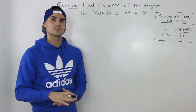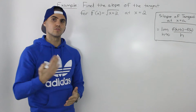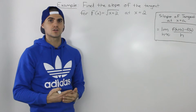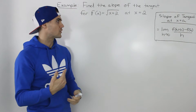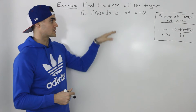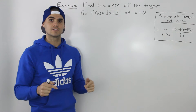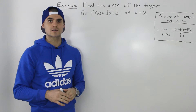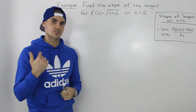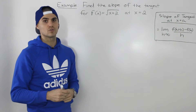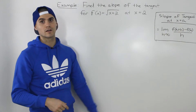Before continuing on this example, I'd highly recommend, if you haven't already, review the videos for the previous section where we rationalize radicals in both the numerator and the denominator, because we're going to have to do that in this example. You can click the link in the description box where the whole course is organized by section and just go to the previous section and review those videos before continuing.